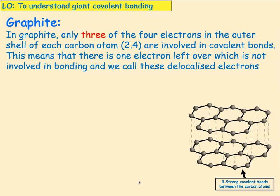Looking at graphite now — graphite is still made of carbon, and remember the carbon has four electrons in its outer shell. But only three of the four electrons are involved in covalent bonding. So if you look at this carbon here, we've got one bond there, one bond there, and one bond there — but the fourth one is left over and there's no bond downwards.